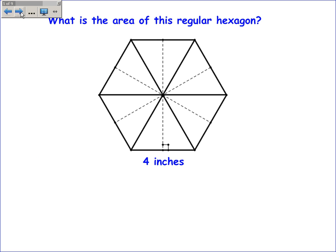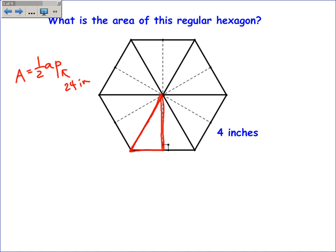What is the area of this regular hexagon? The area is one half the apothem times the perimeter. I don't know either the apothem or the perimeter — all I know is the side length is 4. I'll start with the perimeter: each side is 4 inches and there are 6 sides, so the perimeter is 4 times 6 equals 24 inches. To find the apothem, I look at this triangle. The base length is half of the side length, so it must be 2.